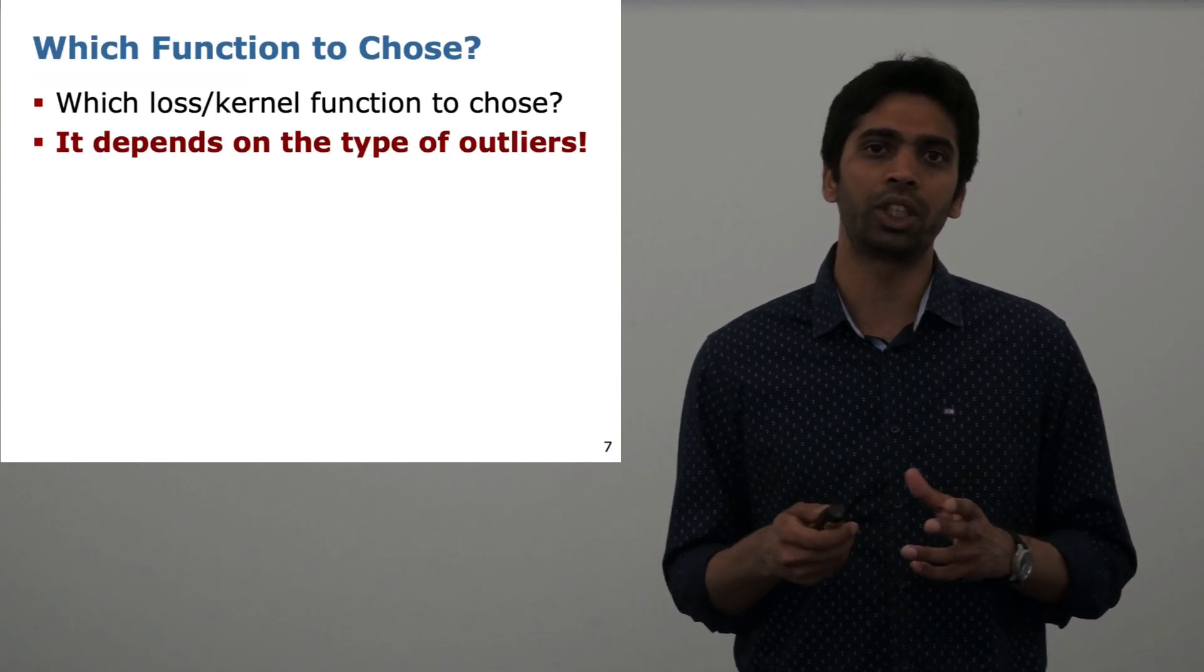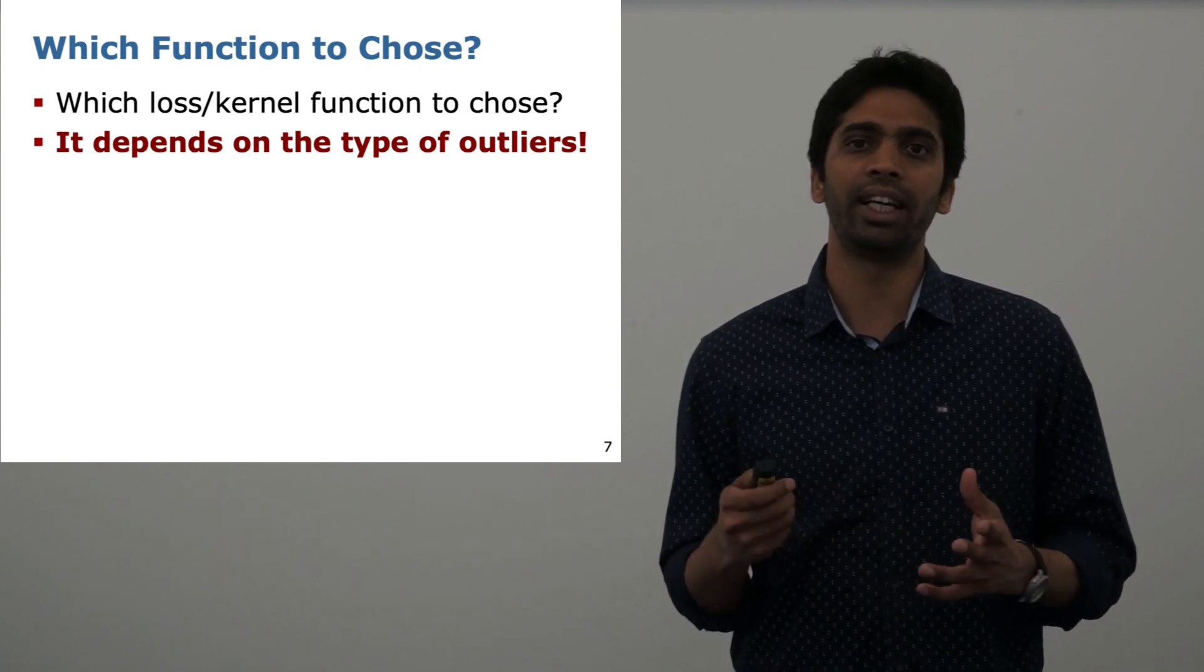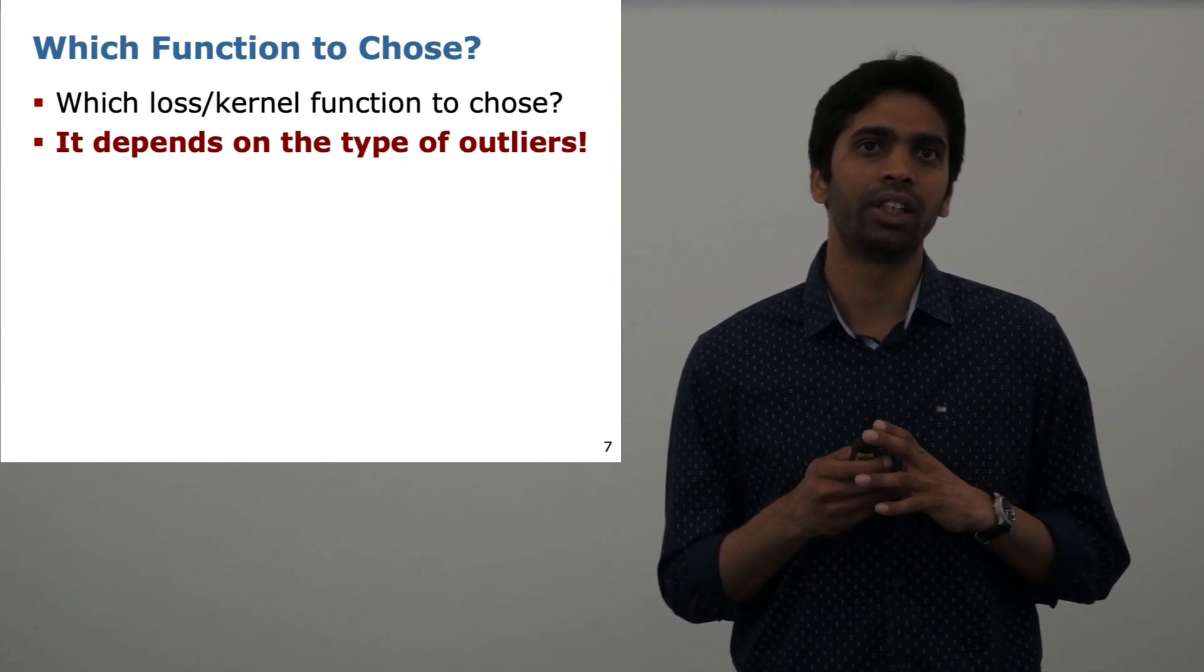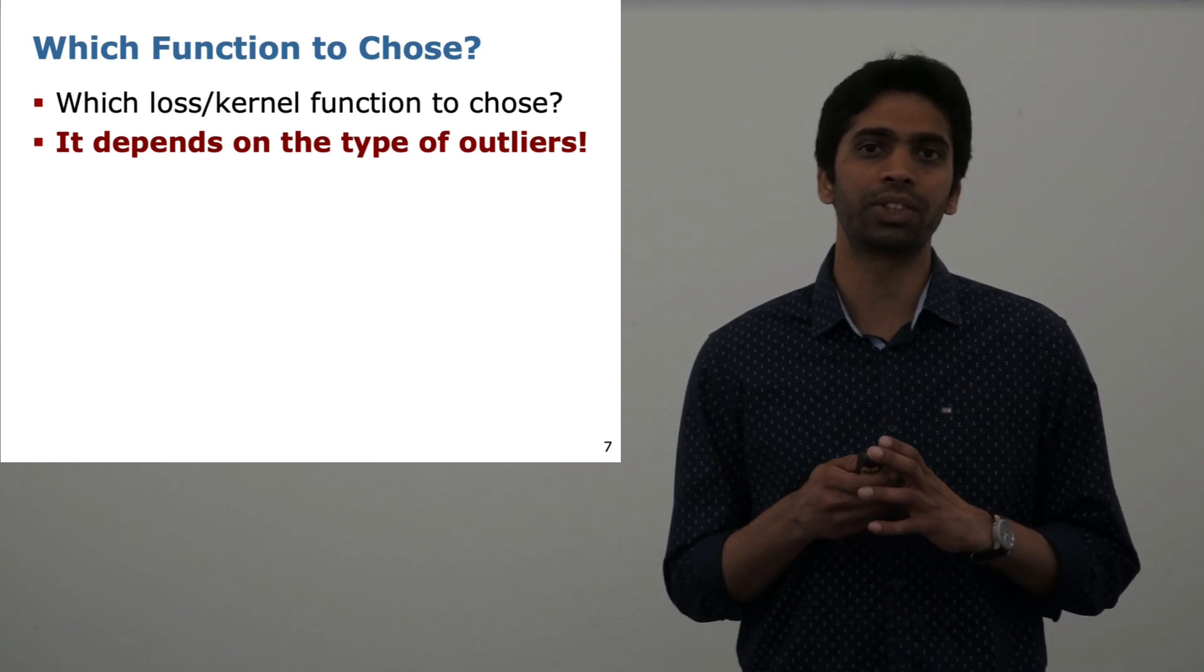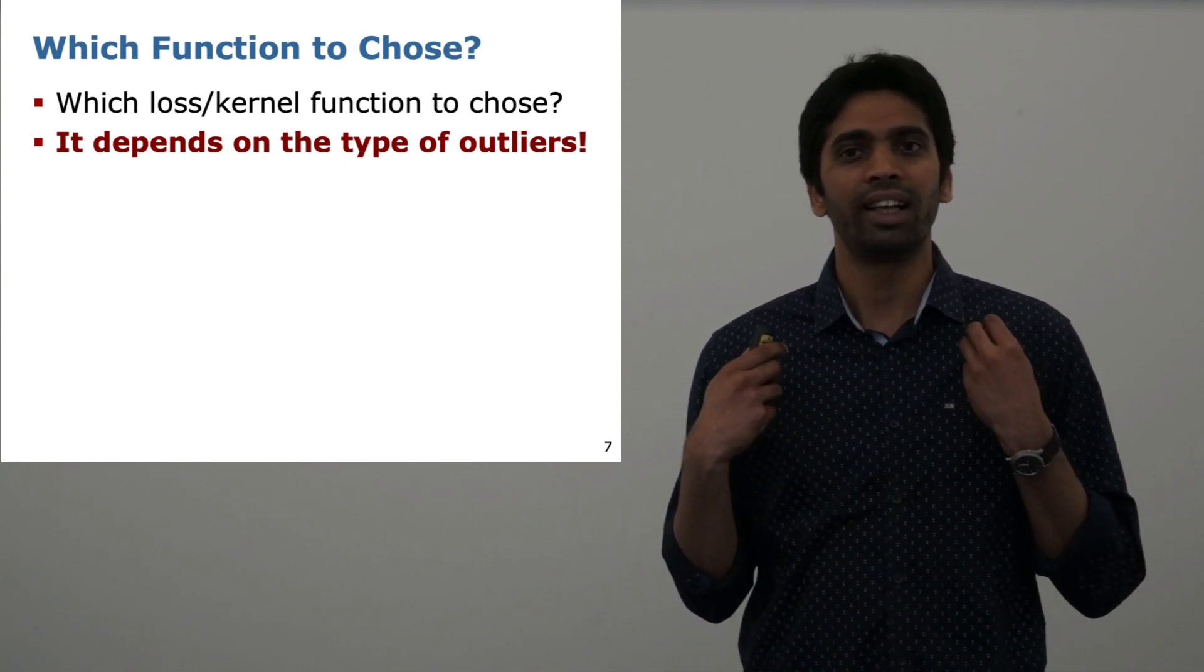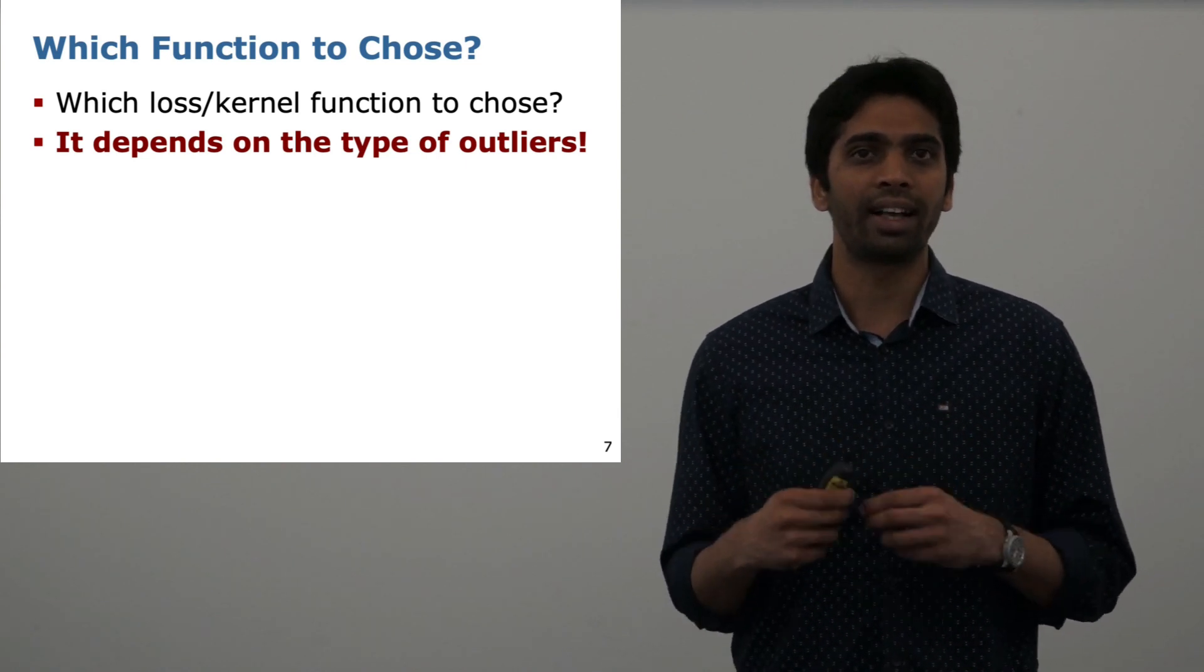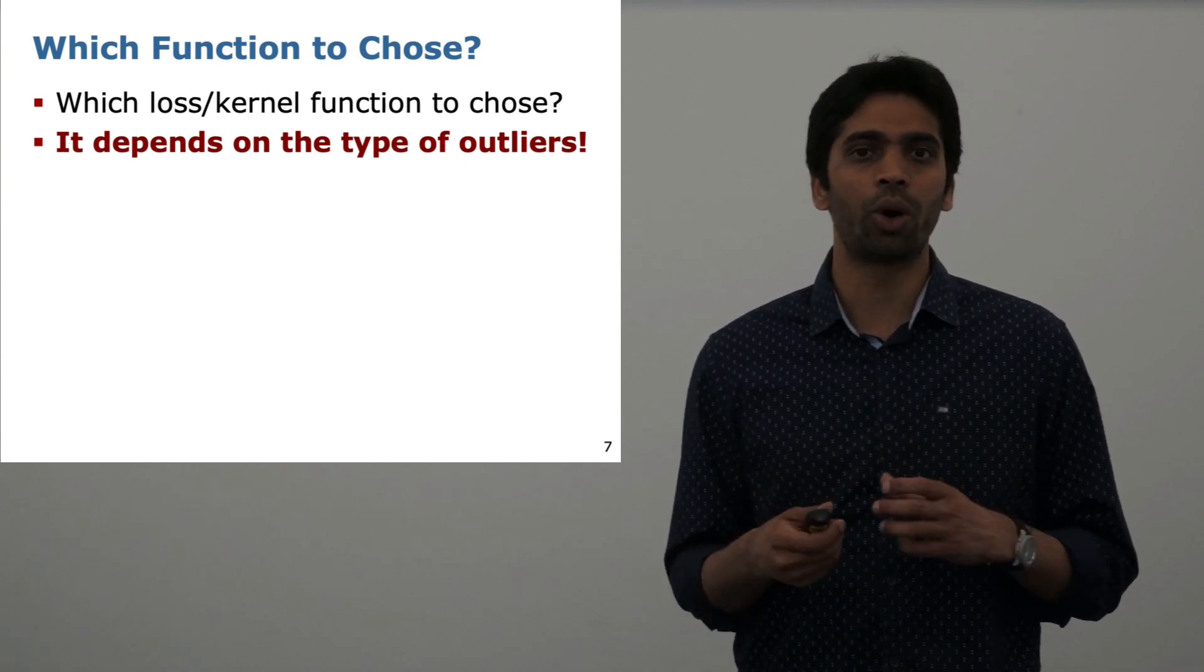But then the question comes, which kernel or loss function should I choose? The answer is it really depends on the outlier distribution. There are different kernels which work well with different outlier distributions, and this is often difficult to determine a priori as this outlier distribution can change on the go.